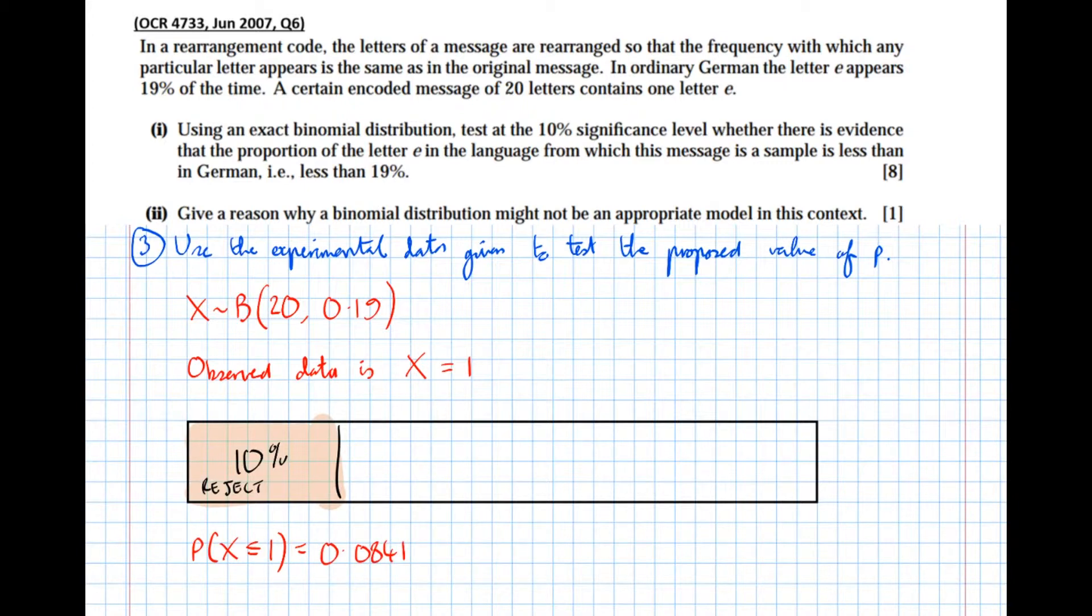Right so that's 0.0841 equals 0.0841. So what we're going to do now, now that we know 0.0841 or 8.41 percent of the probability lies to the left of one, we're going to see where one lies on this sliding scale.